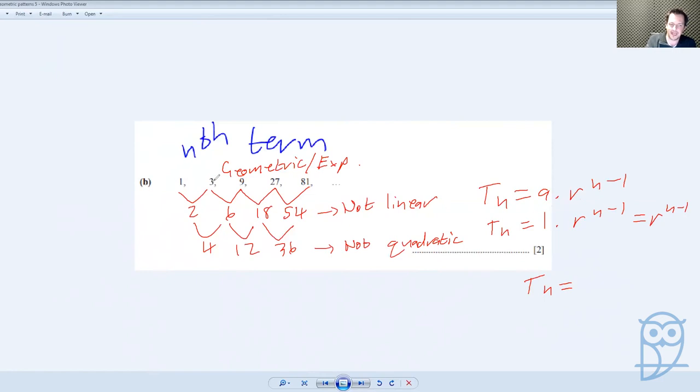What are we multiplying each time? Well, if you can't see it, you can do as I said last time: you take this and you divide by that. You take the term, you divide by the previous term. 3 divided by 1 is 3, 9 divided by 3 is 3, 27 divided by 9 is 3, 81 divided by 27 is 3, which means that my r is 3, n minus 1. Bam, you've got your 2 marks. That simple.